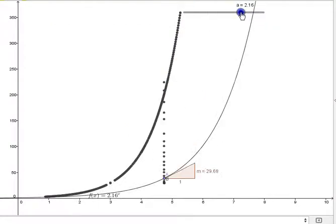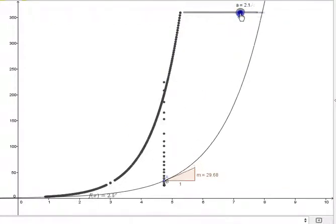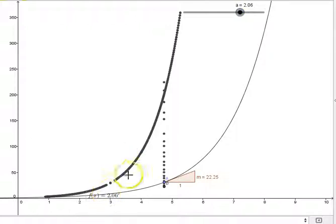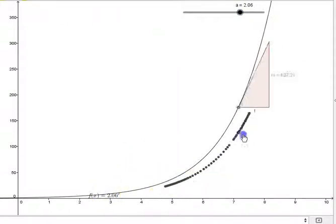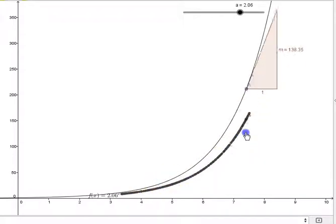Whereas when we were down at the 2s, when we were down here at y equals 2 to the x, you can see it was below the function. All of this is moving towards a particular, all of this discussion is moving towards one particular idea.